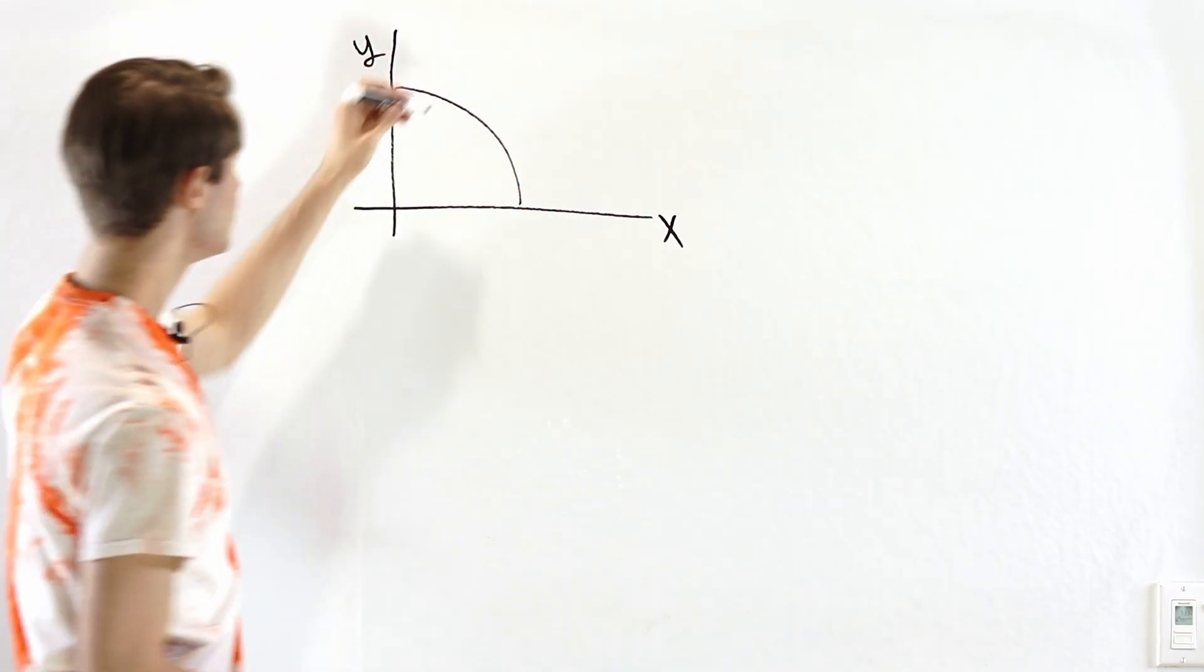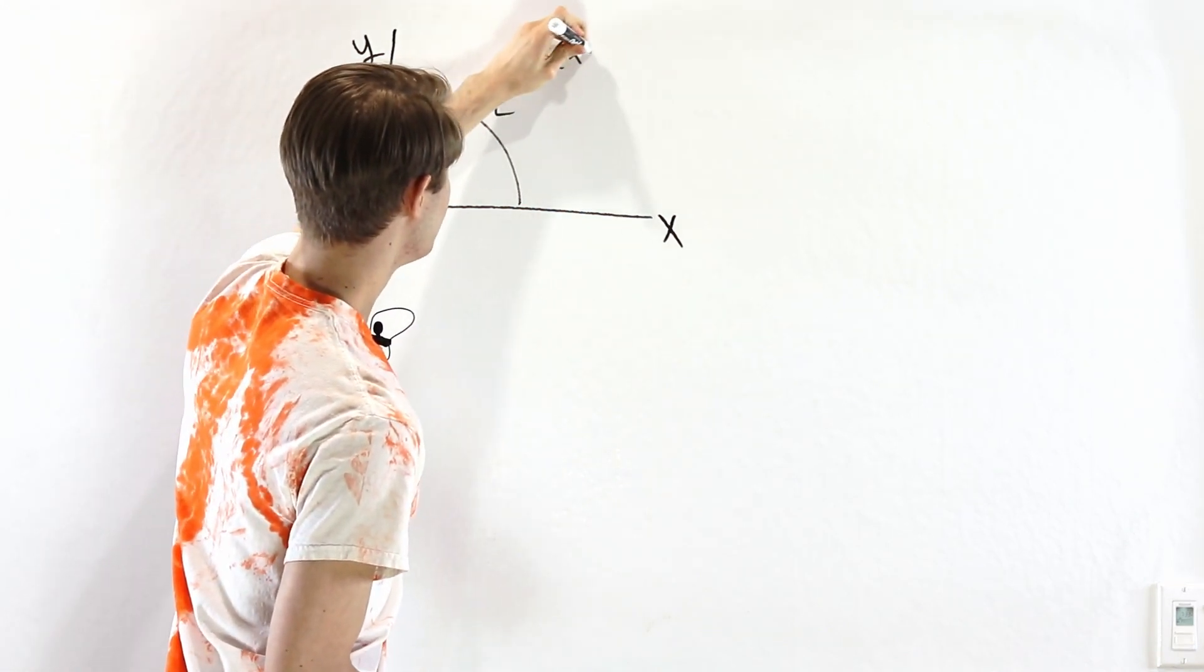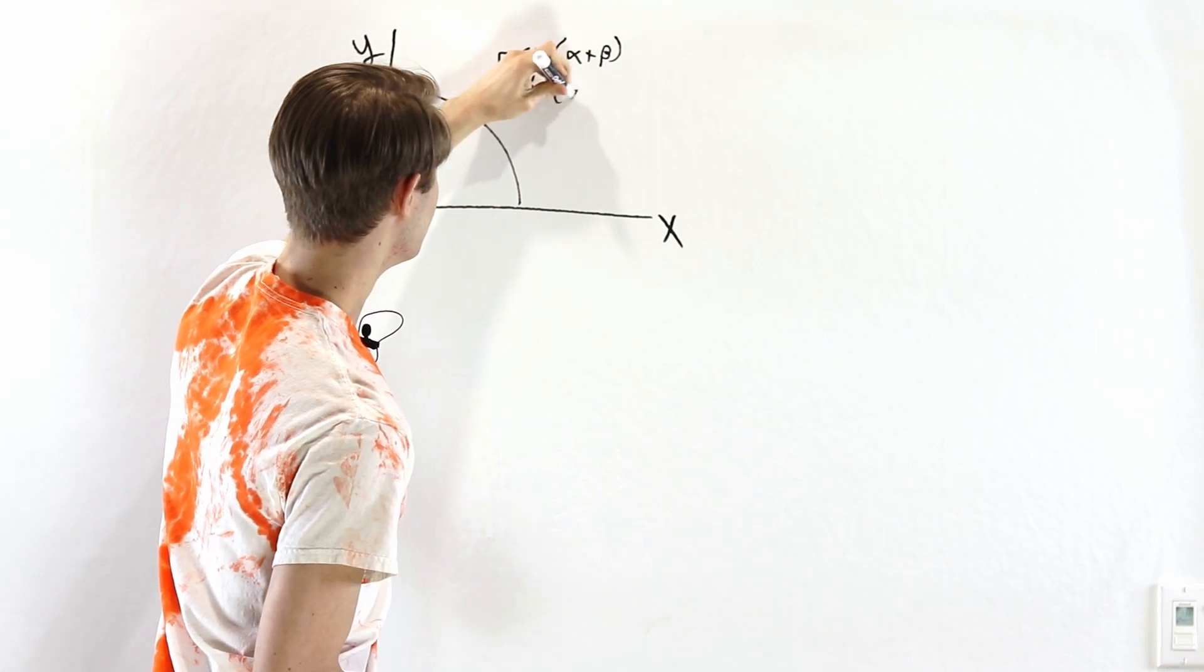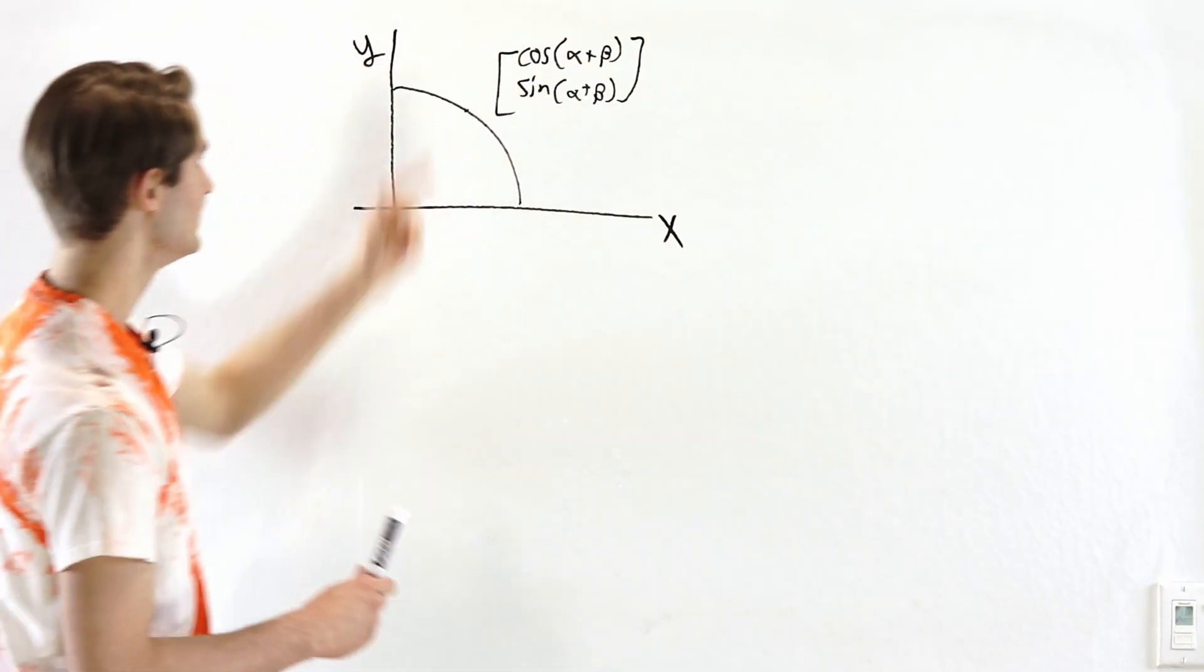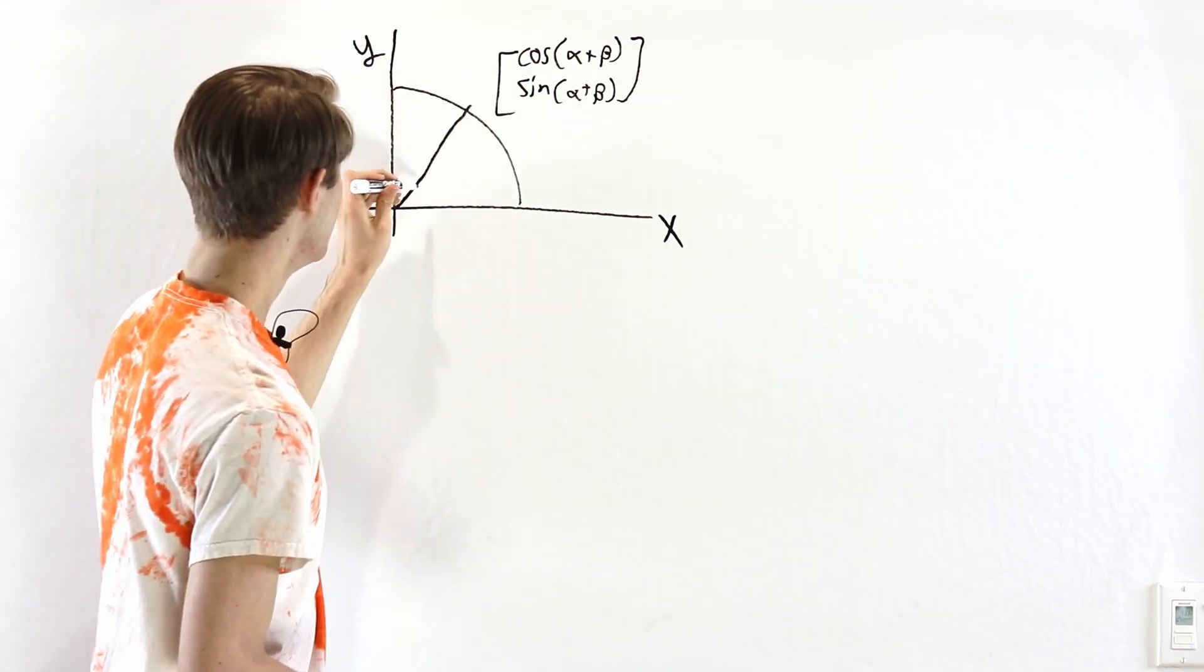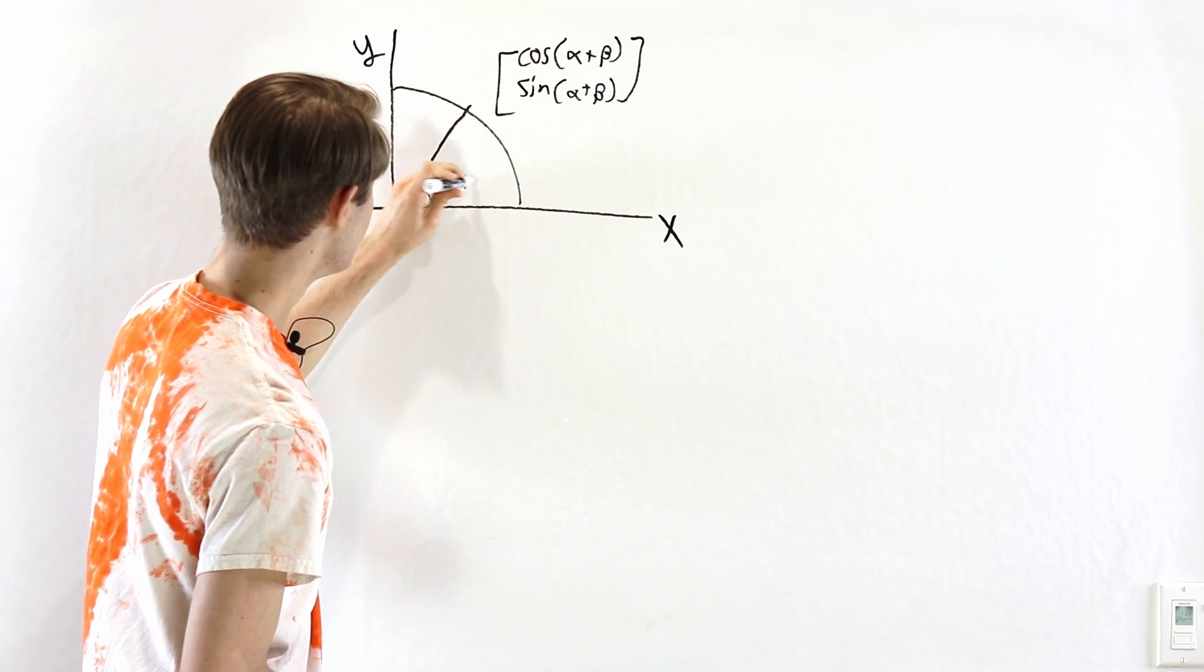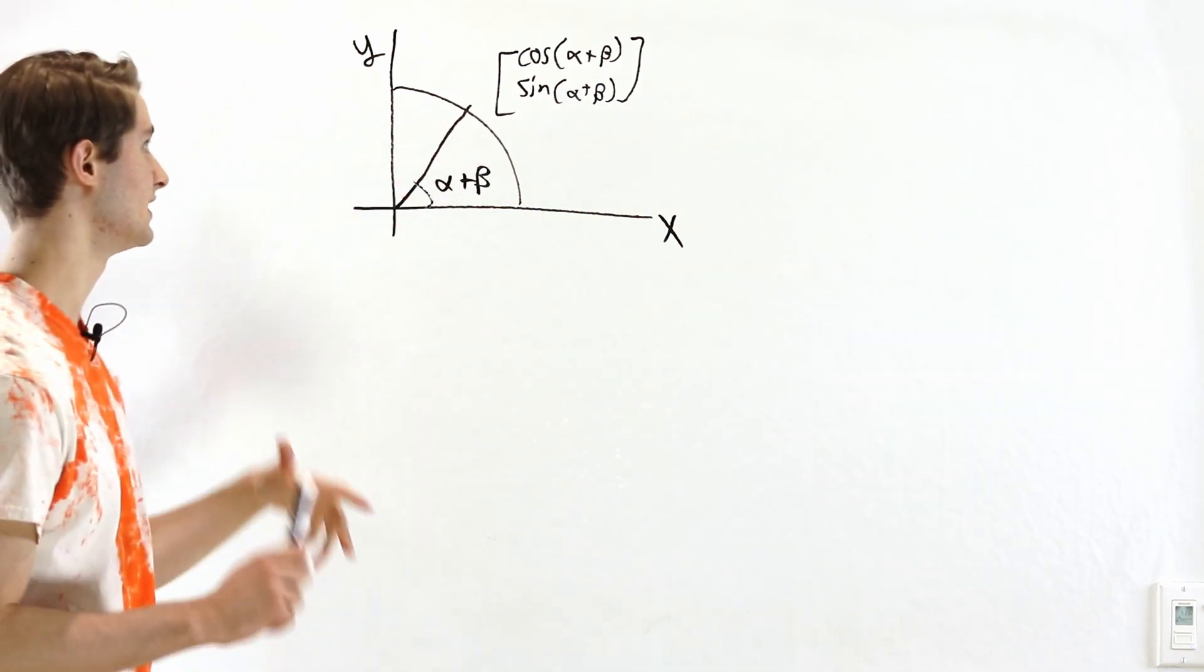If we want to think about what is the cosine of alpha plus beta and what is the sine of alpha plus beta, well we know that the cosine and the sine are what we get if we start on the x-axis and then we rotate by an angle of alpha plus beta. That's the definition of the cosine and the sine.